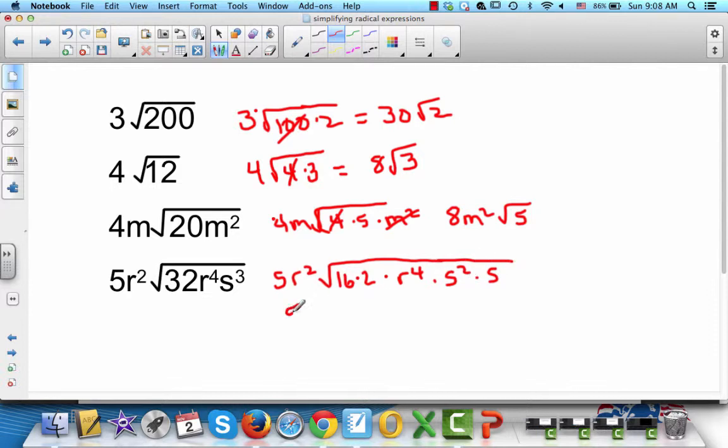So we've got 5r, excuse me. The square root of 16 is 4. So we get 4 times 5 gives us 20.